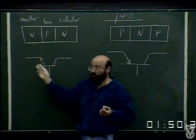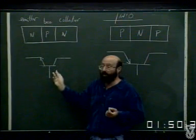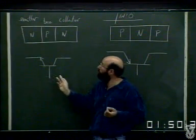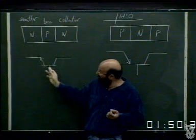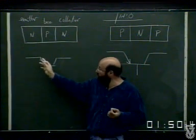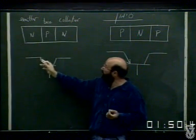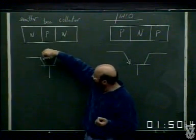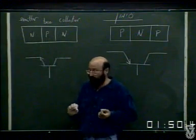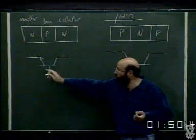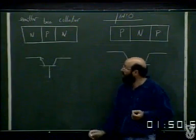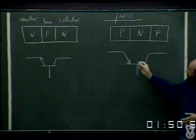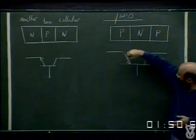הסימון הסכמטי הוא סימון כזה למבנה NPN. כיוון החץ באמיטר אומר שזה מתכונן להיות האמיטר, וכיוון הזרם בו כרגיל בדיודות - כיוון החץ זה מפה לאן. זכר לסמל של הדיודה. אפשר גם לבנות PNP, שזה בדיוק אותו דבר, רק סימון פה עם חץ הפוך.